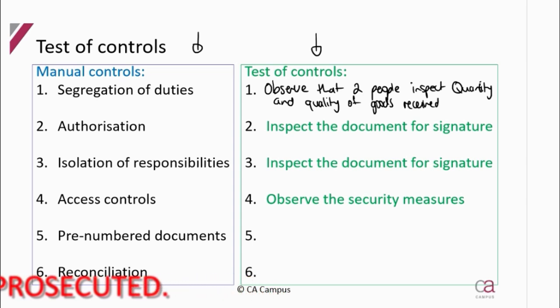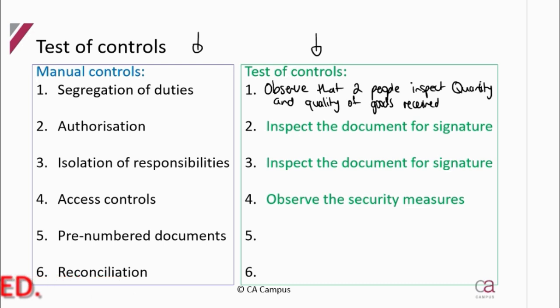To test segregation of duties, you could observe that the function is split between more than one person. For authorization, inspect the relevant document for a signature. For isolation of responsibilities, somebody is held accountable and approves the work by signing a document. For access control, observe the security measures in place.